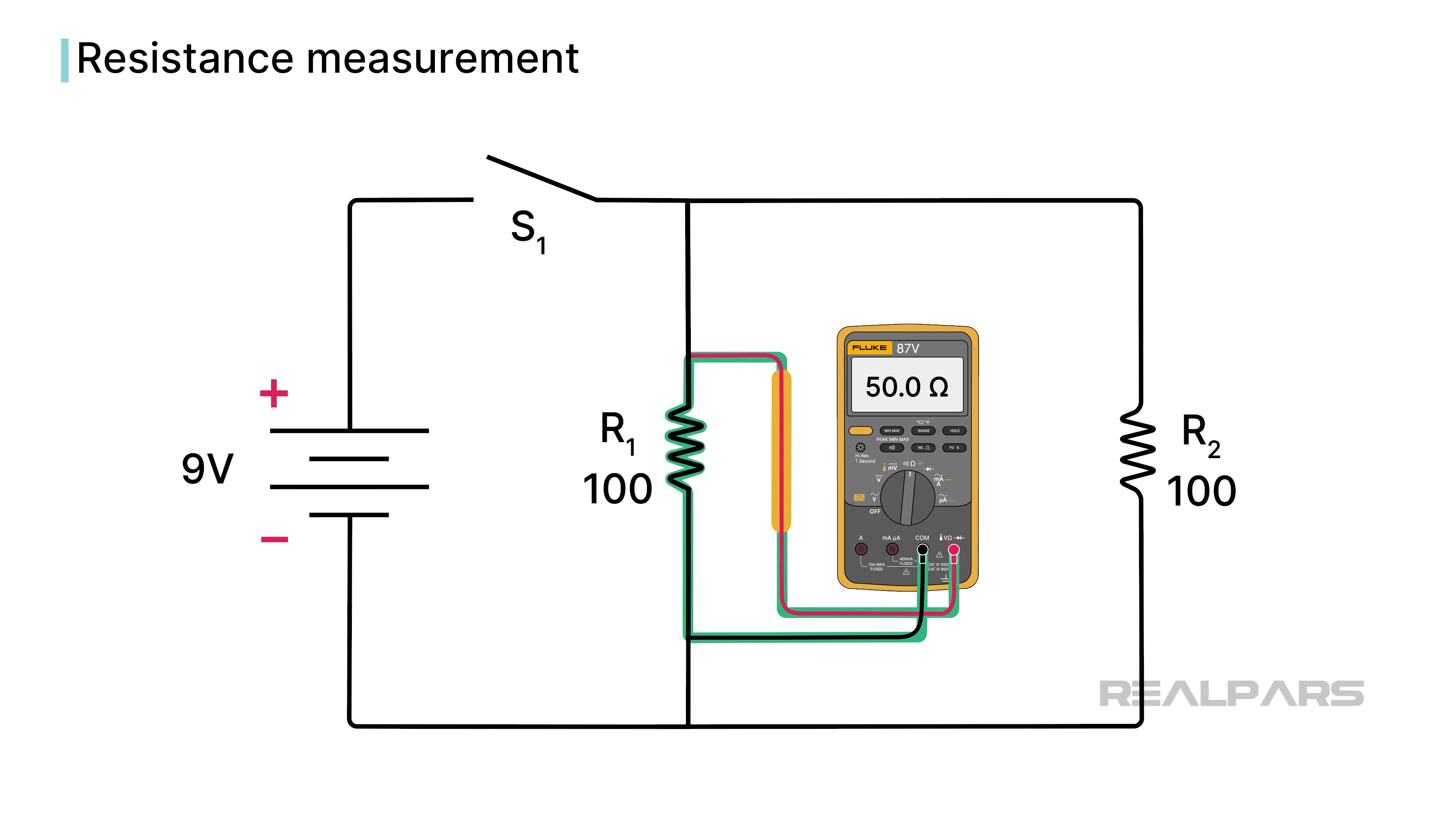The meter will find all paths for the current flow. We want only one path, and that's through R1. So, we need to remove the connection between R1 and R2. Now, the ohmmeter reads 100 ohms because R1 provides the only current path.